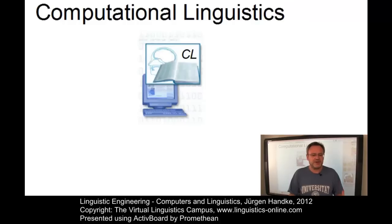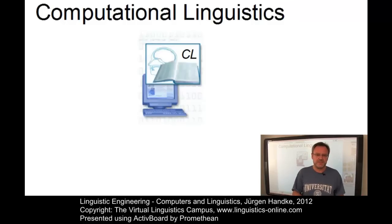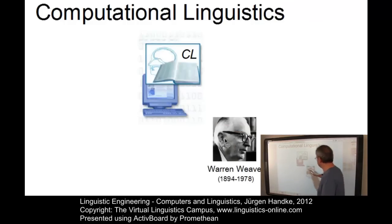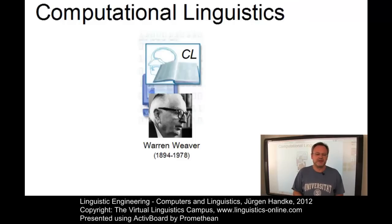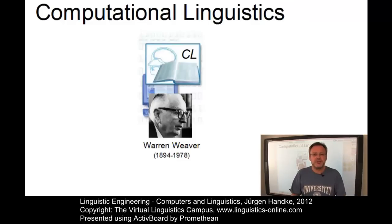Computational linguistics can be defined as a special area of artificial intelligence, or as a special branch of linguistics. As an area of artificial intelligence, it has a relatively long history, going back to 1949 when first approaches towards machine translation were developed by Warren Weaver in the United States. As a branch of linguistics, computational linguistics is much younger — it was not before the beginning of the 1970s when linguistic ideas began to penetrate artificial intelligence.